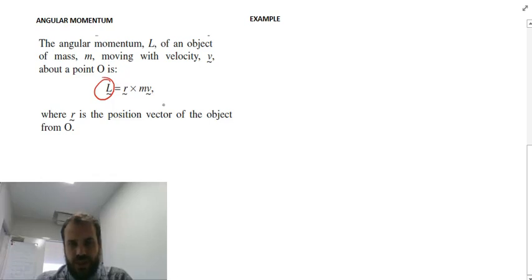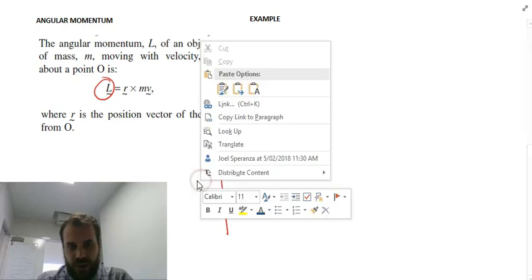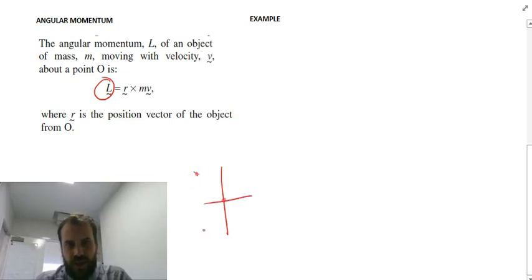R is the position vector of the object from O. So here's my origin. If the object was here, then R would be the vector pointing to that. So that's what R is. Now, M is the mass of the object, and V is the velocity.